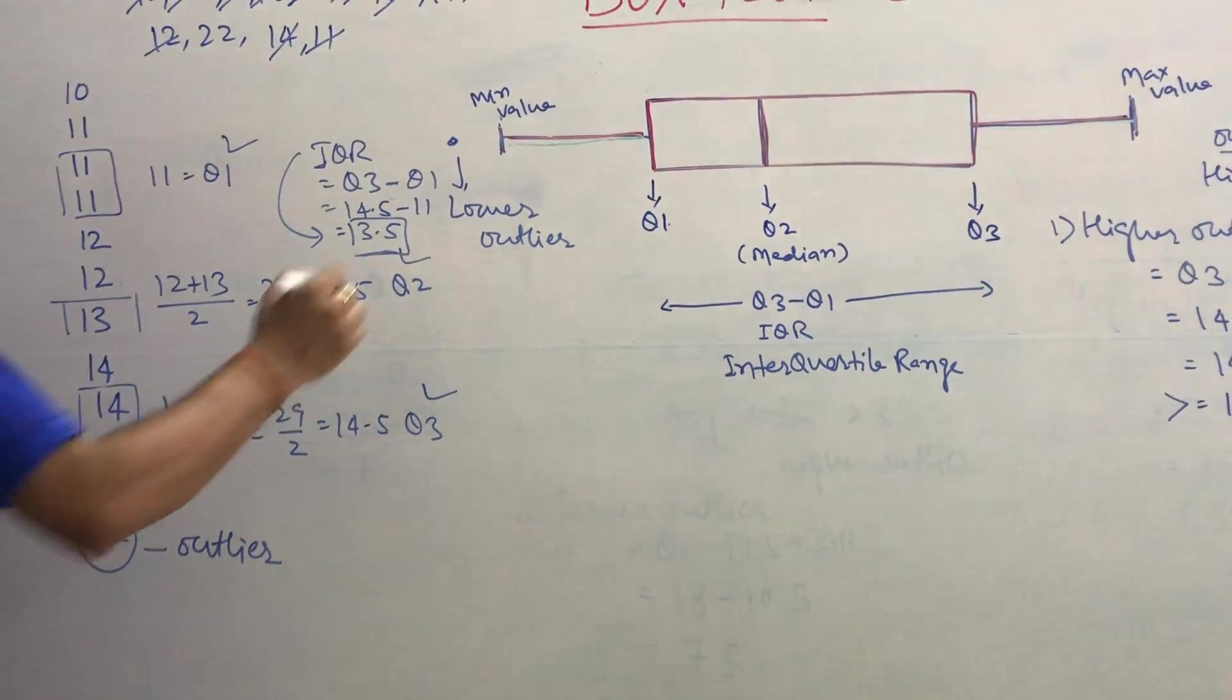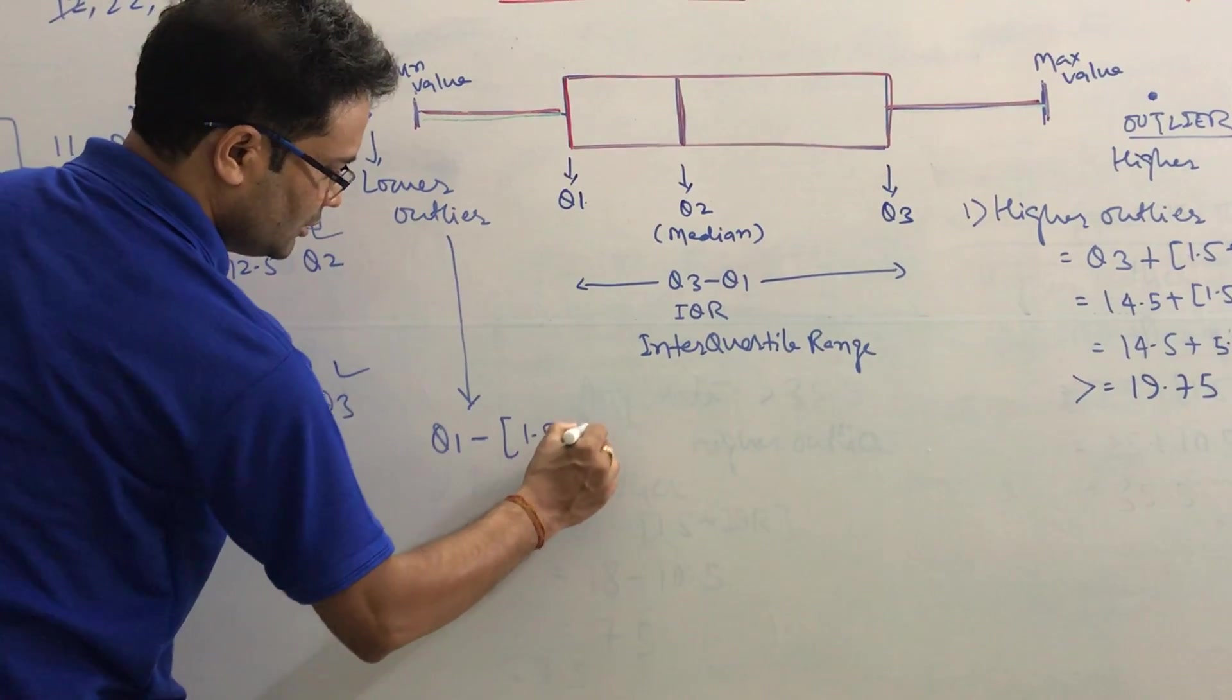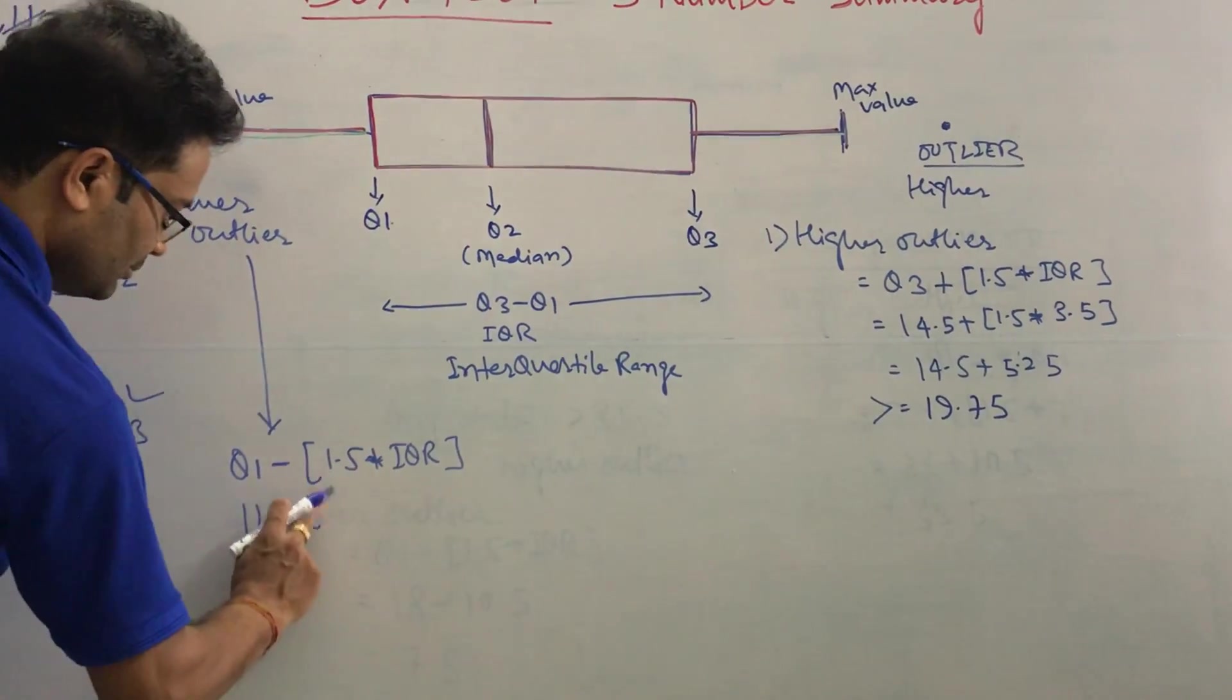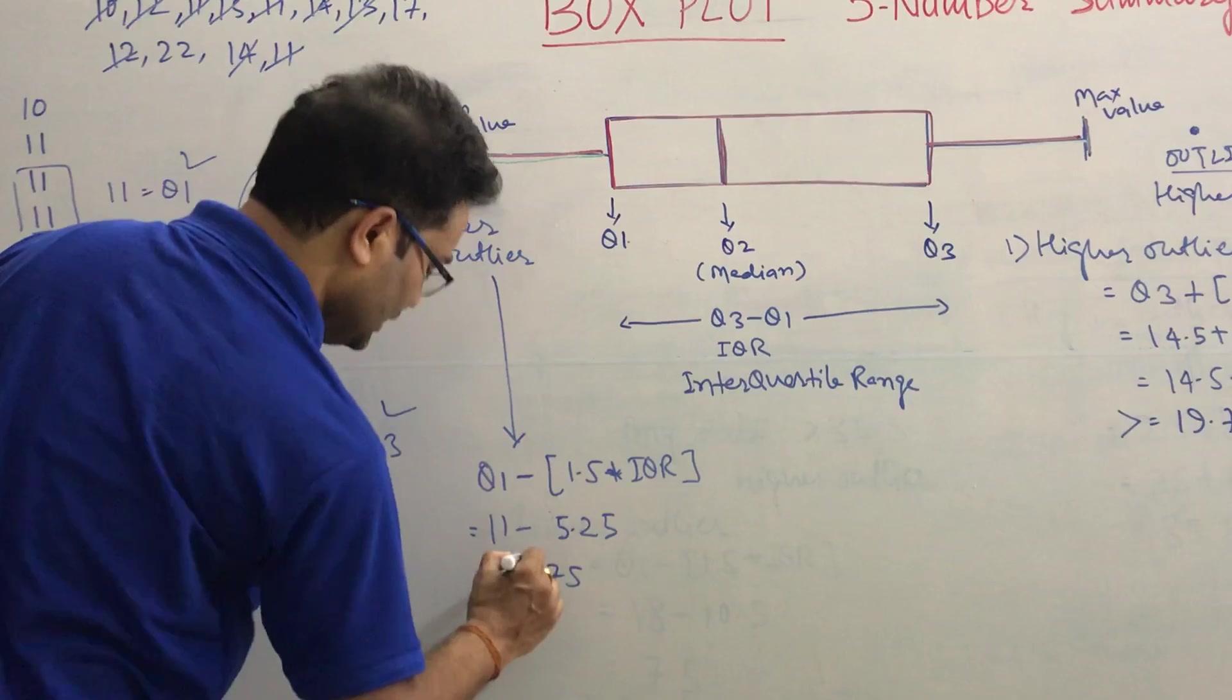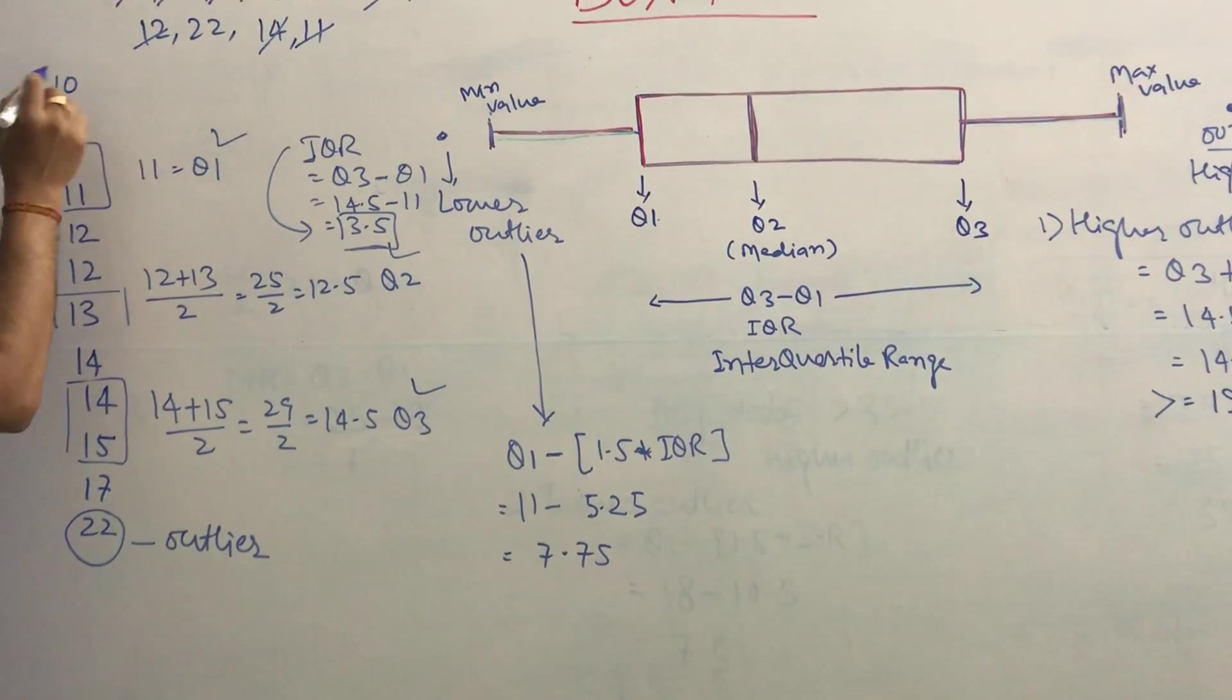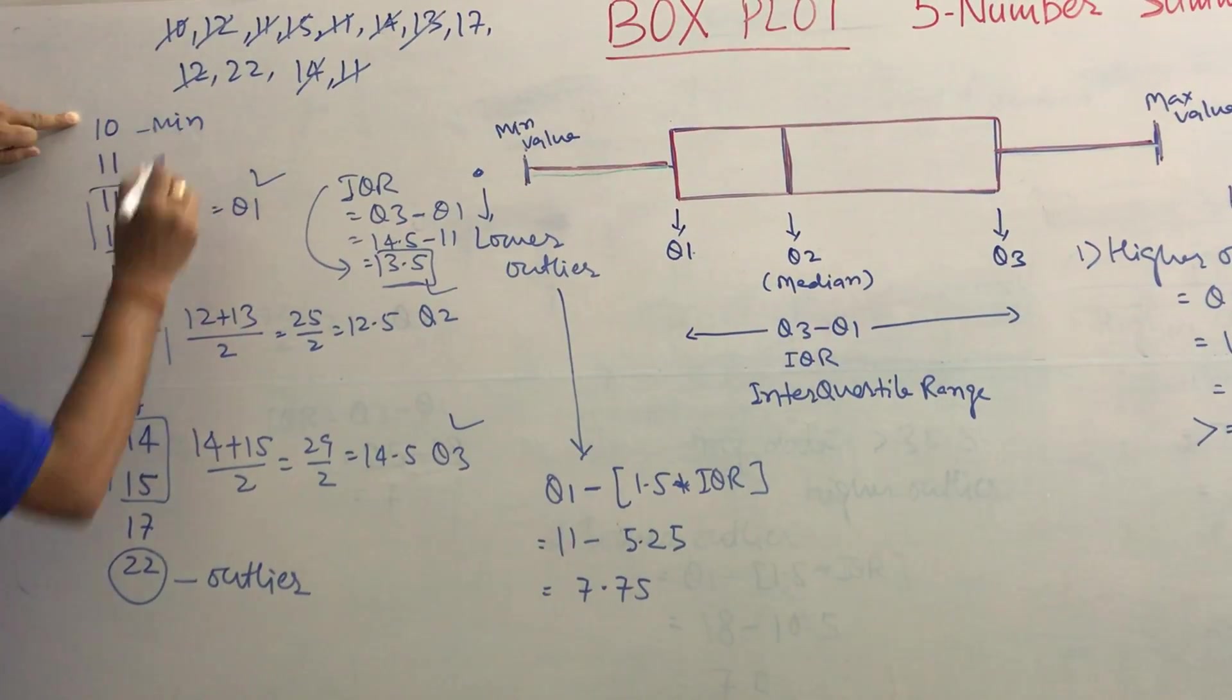The same way we can check the lower outlier. How to check? Q1 minus—here I did plus, here it's minus—1.5 times IQR. So 11 minus 1.5 times IQR equals 5.25, so 7.75. Any data less than 7.75 would be an outlier, but we don't have any—the minimum data is 10. So we don't have any lower outlier. In this case, the remaining data after outliers is from 10 to 17. So 10 is the min data and 17 is the max data.